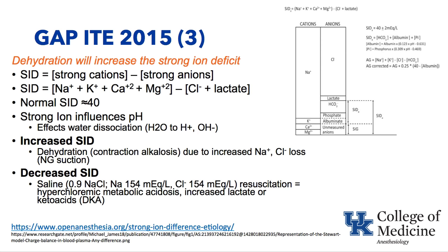Gap number eight was that recent placement of cardiac drug-eluting stents is a contraindication to surgery in a freestanding outpatient surgery center. Surgery should not be performed if a patient had insertion of a bare metal stent in the preceding four to six weeks, or a drug-eluting stent within the last 12 months. There is a high risk of stent thrombosis during surgery due to the high-stress environment and catecholamines. Within these time frames, surgery should only be performed if urgent and in a facility with full cardiology support capable of immediate stent intervention.